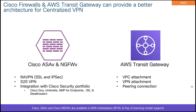Transit Gateway is a regional concept. If you have multiple VPCs within a region, you can use Transit Gateway to interconnect your VPCs. If you want a connection outside of the region, you can use a Peering Connection, which enables connectivity between two Transit Gateways. For example, if you have VPCs in US East Region, you can have a Transit Gateway for East and another for West, and using a Peering Connection, you can connect those two Transit Gateways.